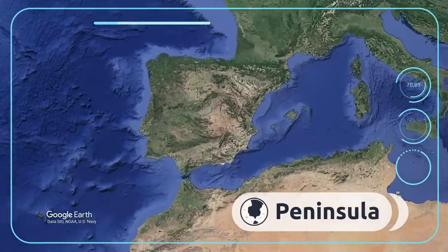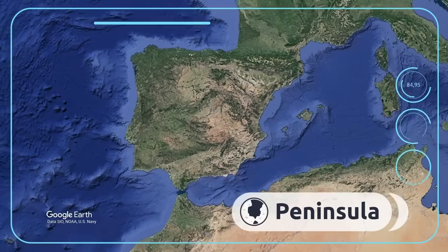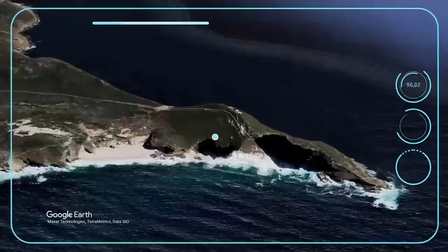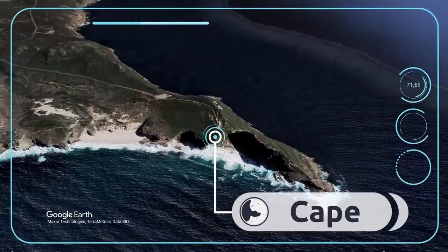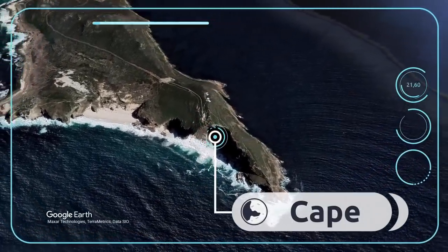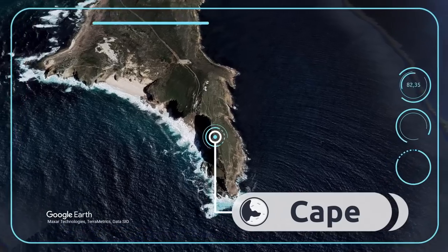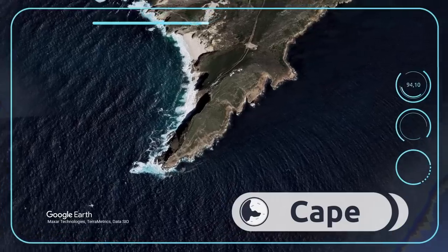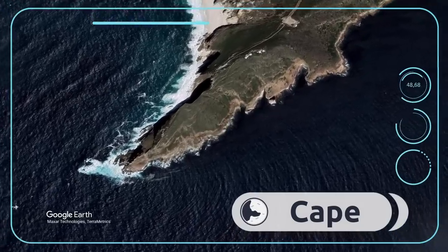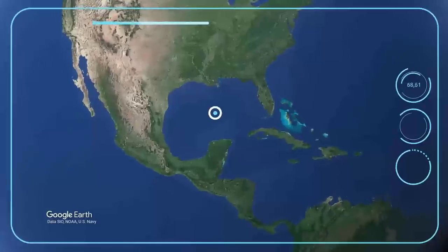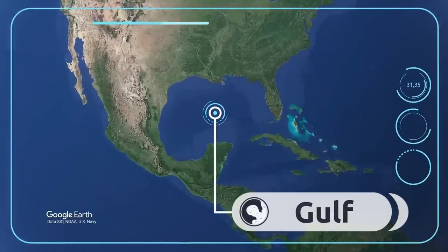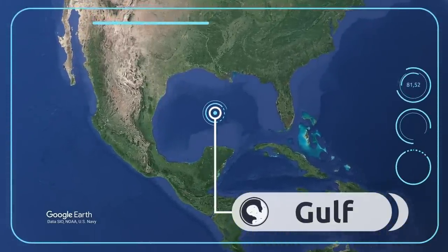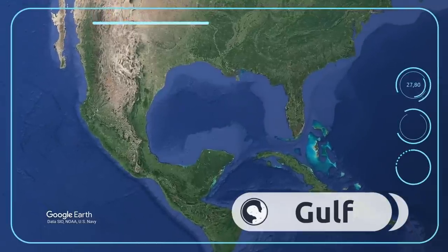A peninsula is a portion of land surrounded by water on three sides — the Iberian Peninsula is one example. A cape is a narrow part of land that extends into the water, usually the sea. The Cape of Good Hope is one of the most famous capes in the world. A gulf is part of the sea that extends into the land, enclosed by two capes — the Gulf of Mexico is one impressive example.